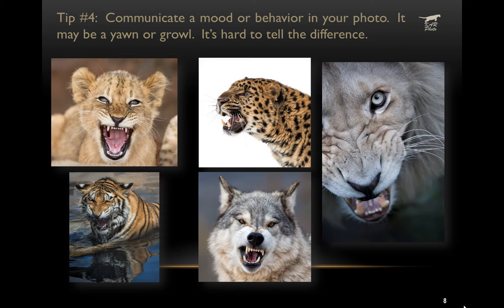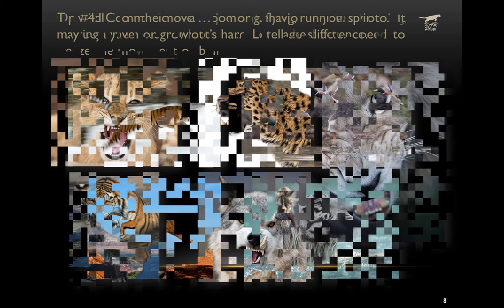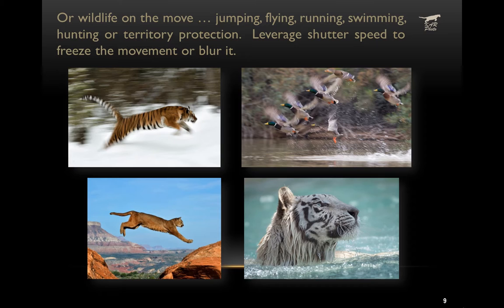The fourth tip is to communicate mood or behavior in your photo. It may be a yawn or a growl — and sometimes it's hard to tell the difference. If you wait for a yawn to be almost done, where the tongue is back in the mouth and the eyes are looking forward, it can look just like a growl. It can also be wildlife on the move: jumping, flying, running, swimming, or hunting.